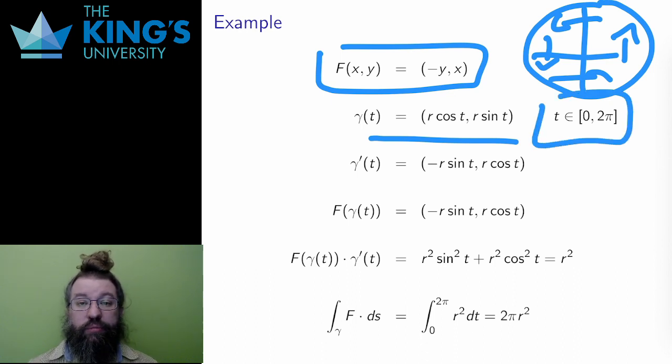γ(t) = (r cos t, r sin t) for t from 0 to 2π. To calculate the line integral, I need these pieces. First, the tangent to the curve. The t derivative of each component of the curve. Then the field evaluated along the curve.